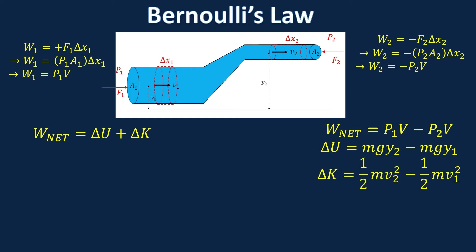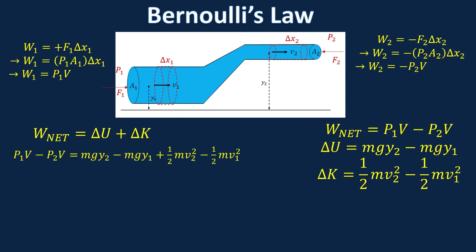Bringing everything back to the original conservation of energy expression and plugging everything in: P1 V minus P2 V equals MgY2 minus MgY1 plus one half mv2 squared minus one half mv1 squared. Now I'm going to get all the ones and twos on the same side, bringing MgY1 and one half mv1 squared over here, and bringing P2 V to the right side.